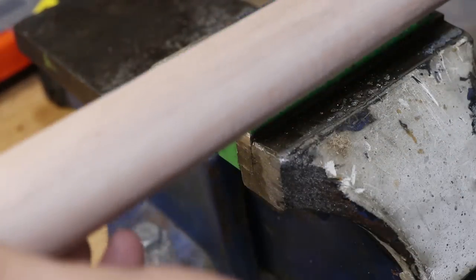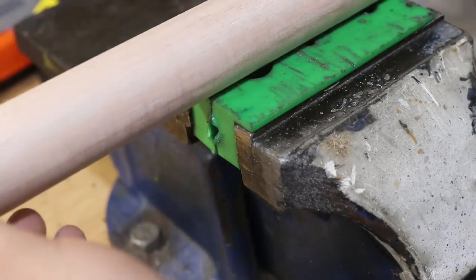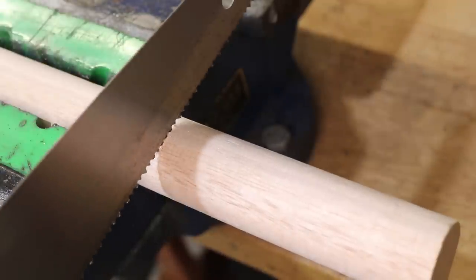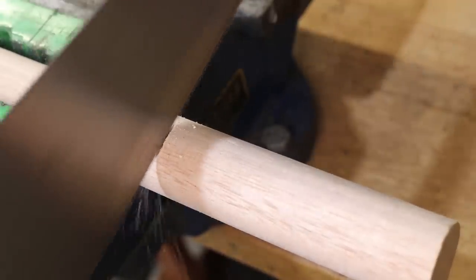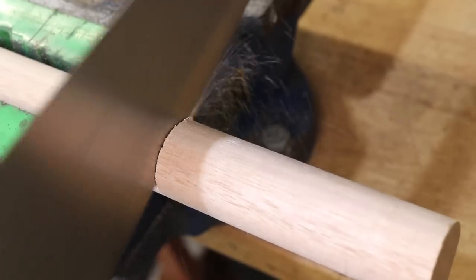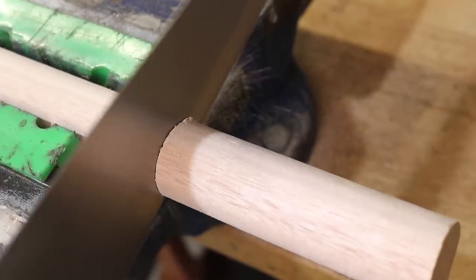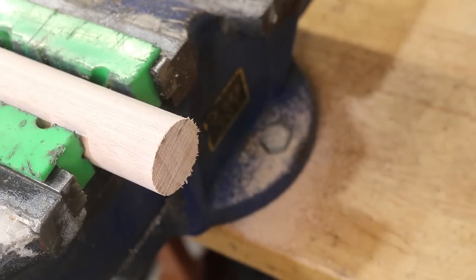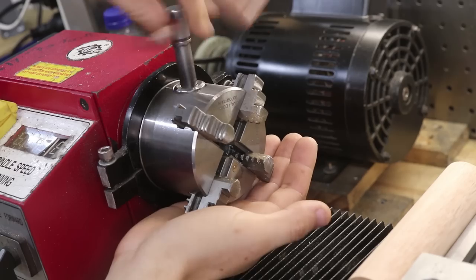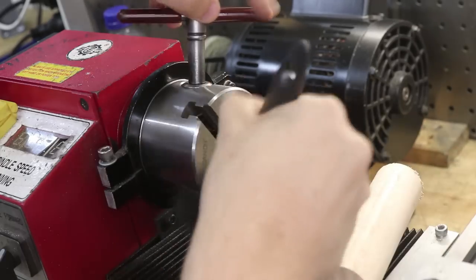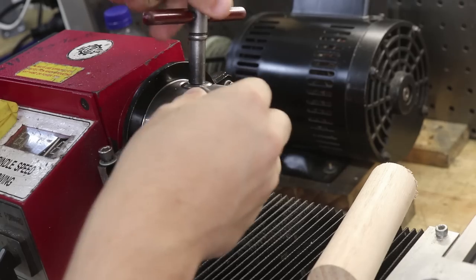I'll start off by making the handle for the clamp. I'll be making it from some Tasmanian oak, which is a really nice hardwood. Now this lathe obviously isn't really set up for turning wood, but I've done it before in the past. I'll just need to give it a really deep clean after I turn it.